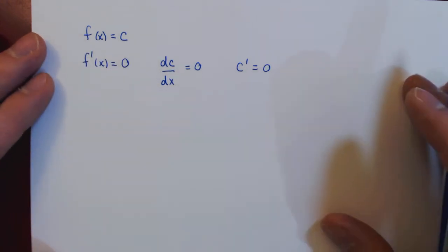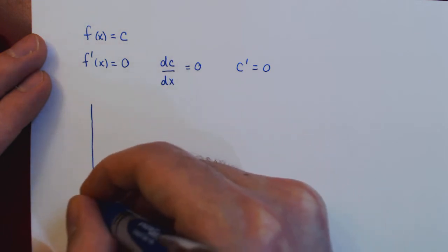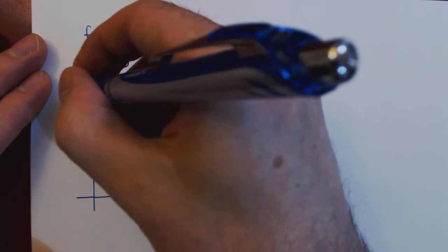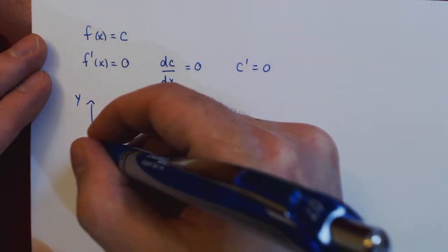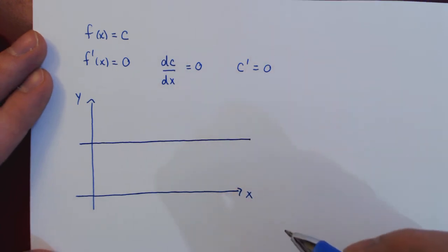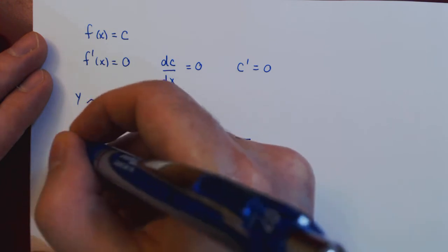So if you have a constant function, assuming here that c is a positive constant, then the graph of f of x is a horizontal line. As for any value of x, the y value is always c.